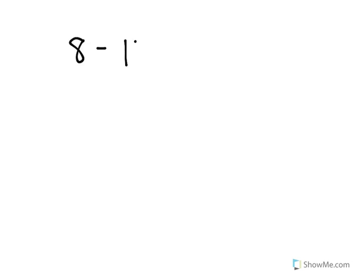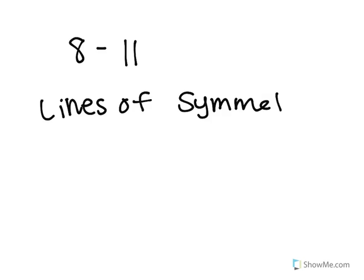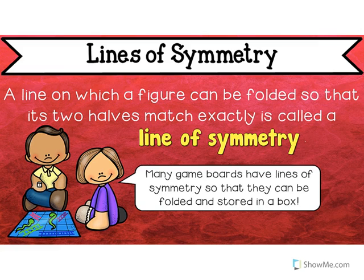Hey guys, we're doing our last lesson in chapter 8 — lesson 11. This is all about lines of symmetry. A line on which a figure can be folded so that its two halves match exactly is called a line of symmetry. Many game boards have lines of symmetry so they can be folded and stored in a box. Let's find some together.